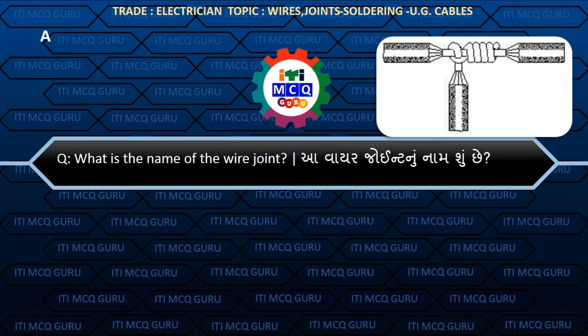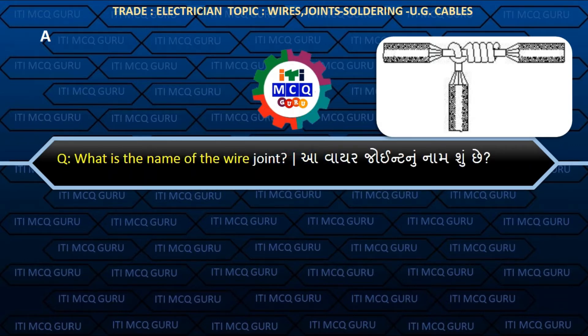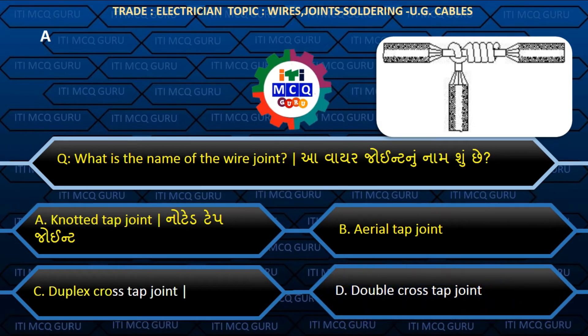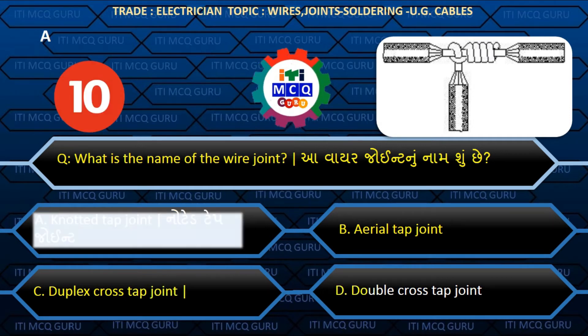What is the name of the wire joint? (A wire joint noo naam shun chhe.) Answer A: Knotted tap joint.